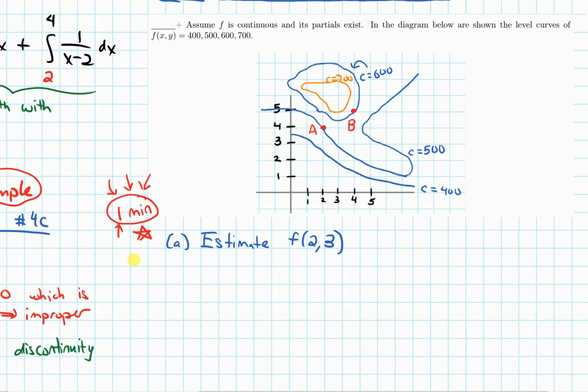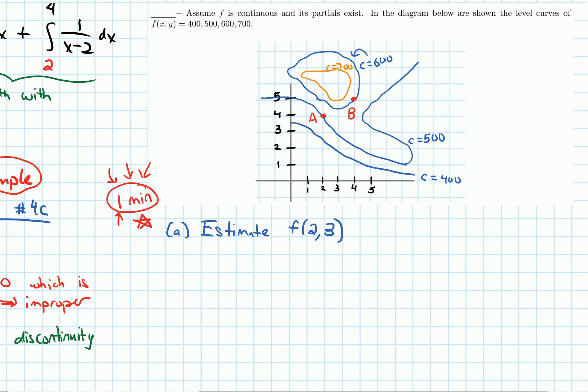Alright, so hopefully we've paused it for a minute to try this question. If I draw where 2, 3 is on this level curve diagram, it would be here. Notice that 2, 3, when I drew it in, is between the c equals 400 and c equals 500 level curves.